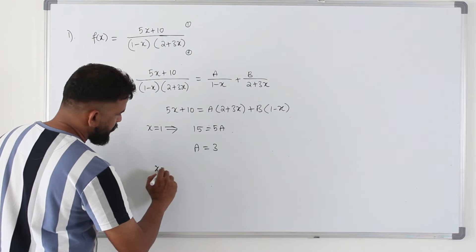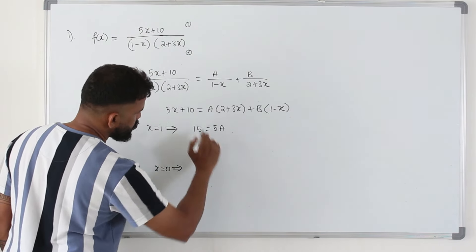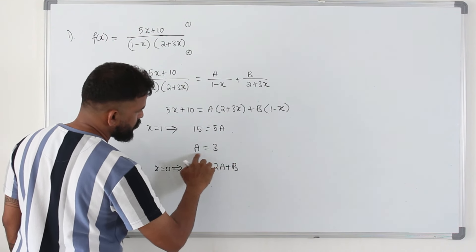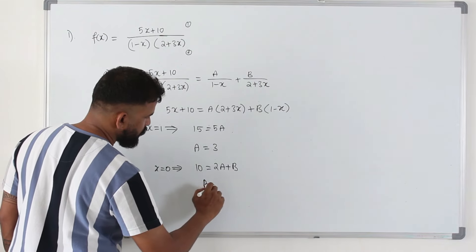And then I'm going to replace x by 0. 10 is equal to 2a plus b. So replace a by 3 here, 6 comes here, b is equal to 4.